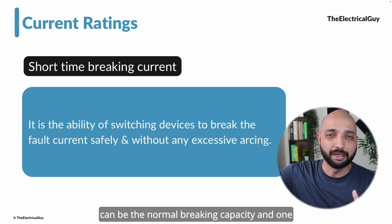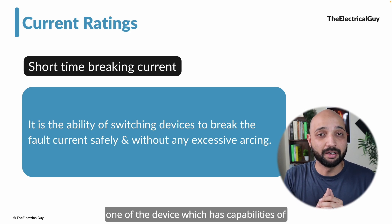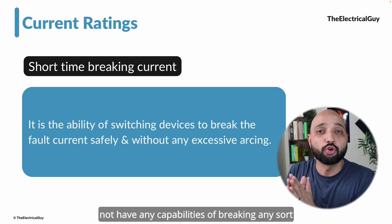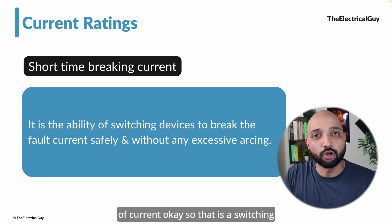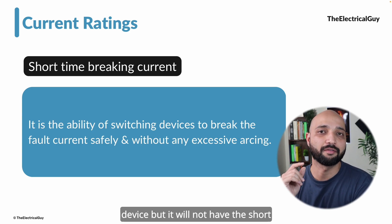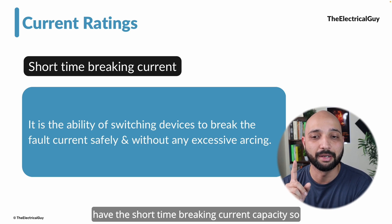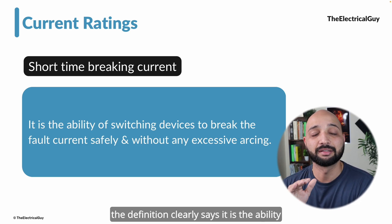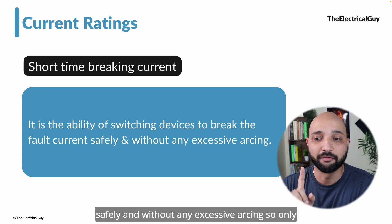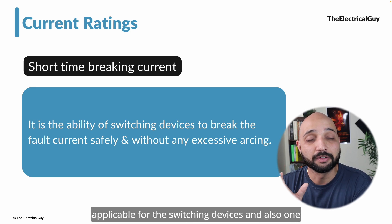Breaking capacity can be normal breaking capacity or abnormal breaking capacity. A circuit breaker is one device which has capabilities of both. If we talk about a disconnector, it does not have any capabilities of breaking any sort of current — so it is a switching device but will not have the short time breaking current capacity. Only a circuit breaker will have the short time breaking current capacity. The definition clearly states: ability of switching devices to break the fault current safely and without any excessive arcing.